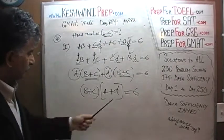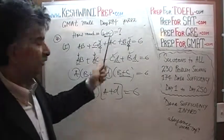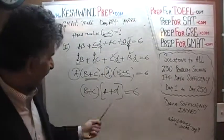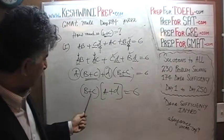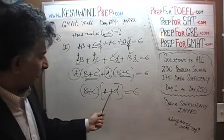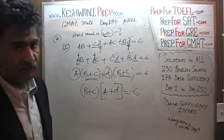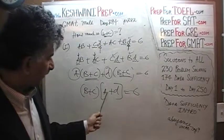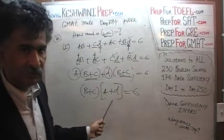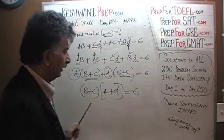The question is: is this enough for us to tell the value of B plus C? The answer is no — this is not enough. We cannot tell what B plus C is unless we know what A plus D is. The first statement by itself is not enough. We need to know the value of A plus D.